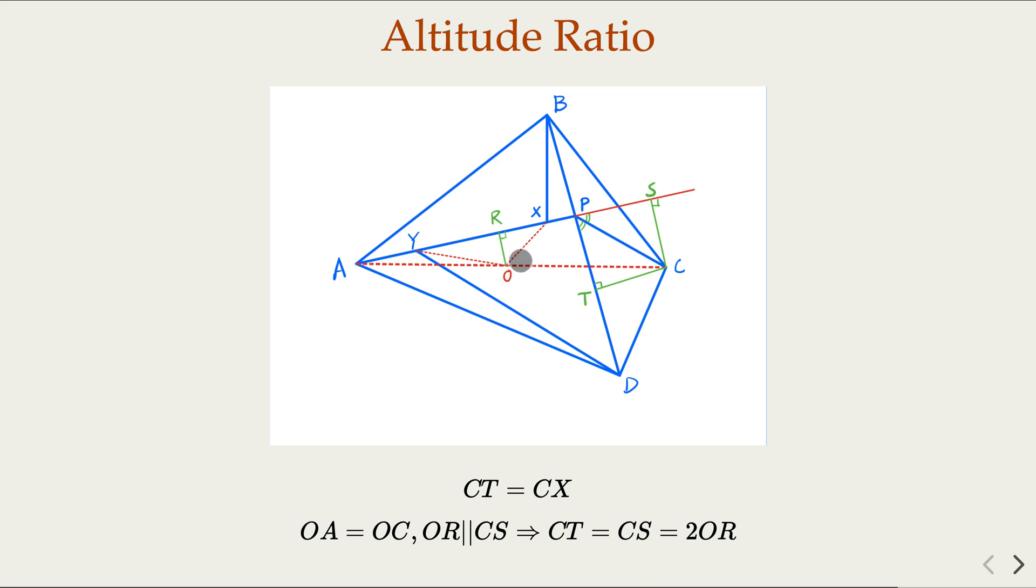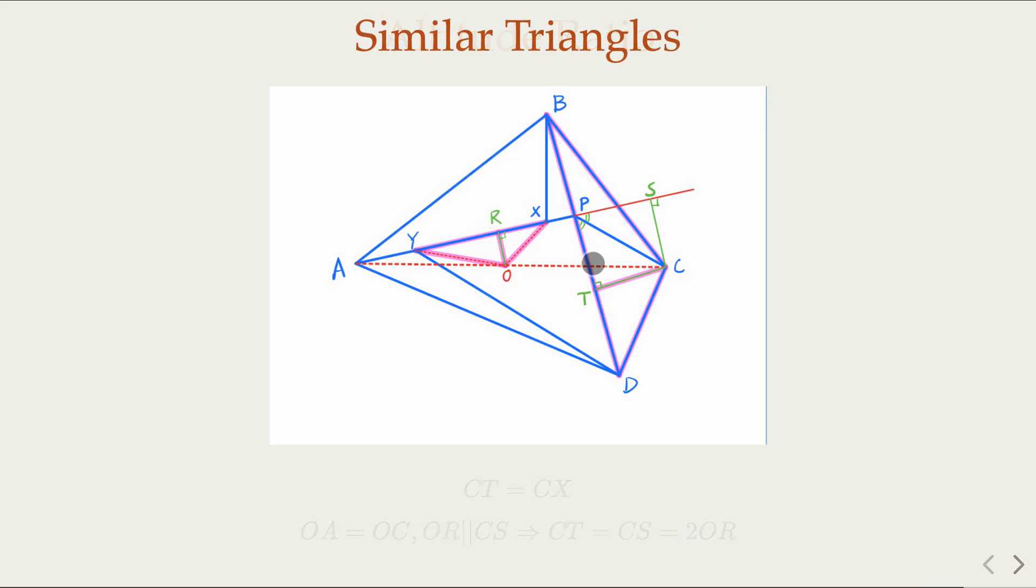This is the typo - CT equals CS. So CT is twice OR, and we're done. Because we have similar triangles and the altitude is in a 2 to 1 ratio, the sides must also be proportional. BD over XY equals CT over OR, which is 2. We reach the conclusion, that's the proof.